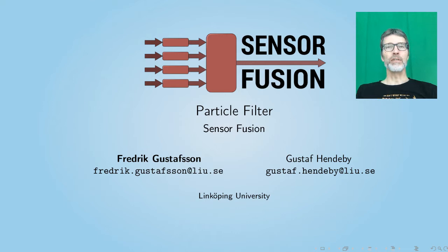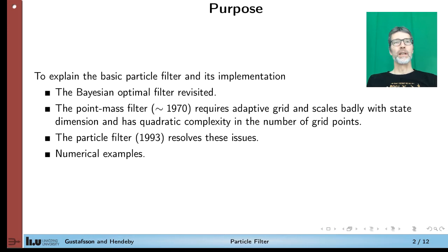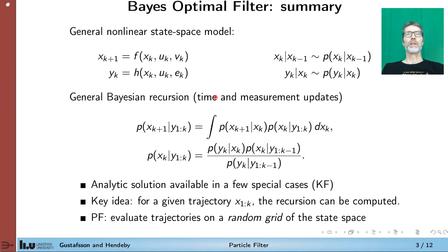We have previously seen the point mass filter as a numerical approximation of the optimal Bayes filter. Today we are going to proceed with the particle filter as a substantial improvement of the point mass filter. The point mass filter was proposed in the early 70s and the particle filter was revealed in 1993, which was a milestone in the development of non-linear filters. Today we will see the basic principles of the simplest implementation of the particle filter and some numerical examples.